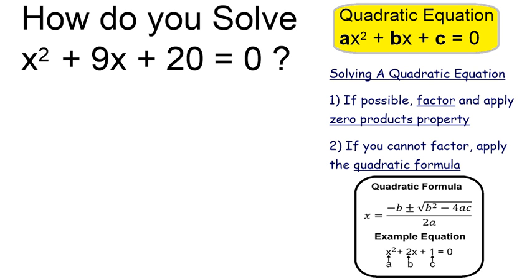When solving a quadratic equation such as this one, it is useful to first see if you can factor it. Factoring and using the zero products property tends to be the easiest way to do it.